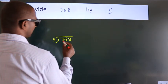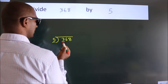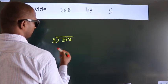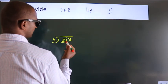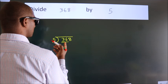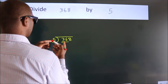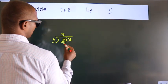Next, here we have 3, here 5. 3 is smaller than 5, so we should take two numbers: 36. A number close to 36 in the 5 table is 5 times 7, which is 35.